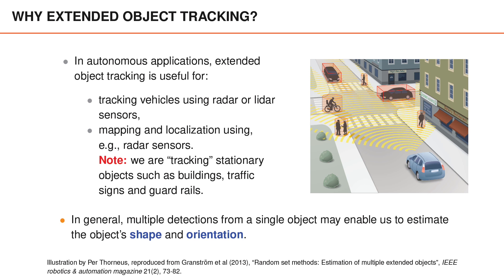Another nice feature of extended object tracking is that since we often receive multiple detections in each measurement scan, we can use their spatial distribution to extract information about both the shape and orientation of the object. We may not observe the entire shape of the object in a single scan, but we can obtain partial information and use filtering to combine information from different scans in order to figure out the rest.